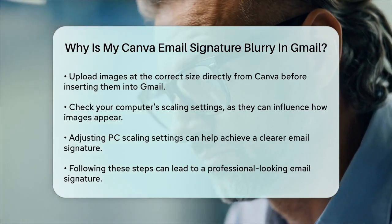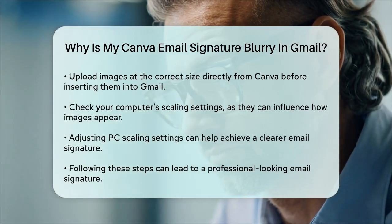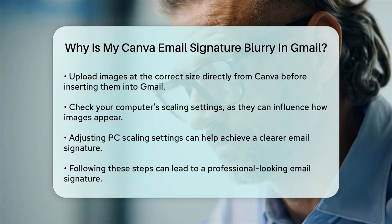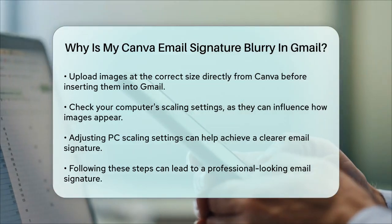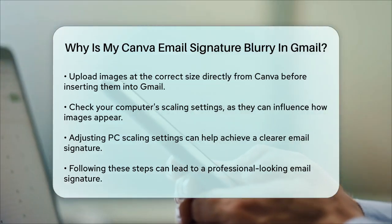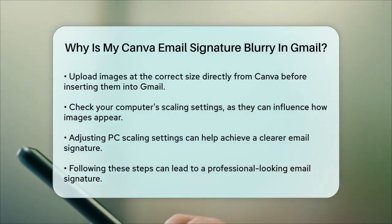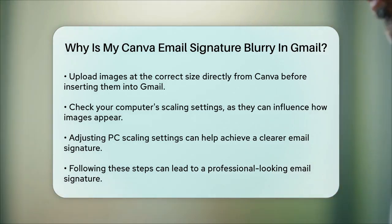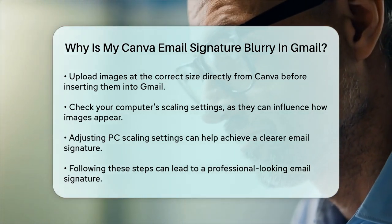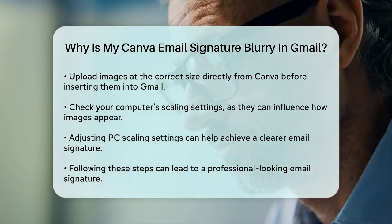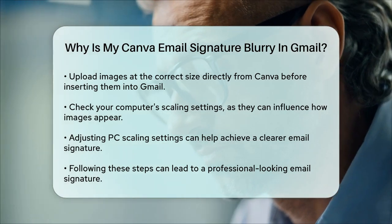By following these steps — using a high-resolution image, setting the correct DPI, choosing the right image format, avoiding HTML resizing, and checking your PC's scaling settings — you should be able to fix that blurry email signature and send professionally branded emails with ease.